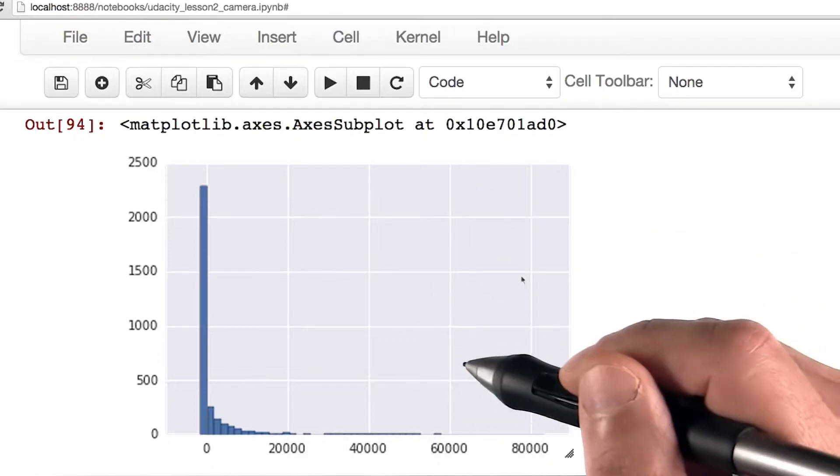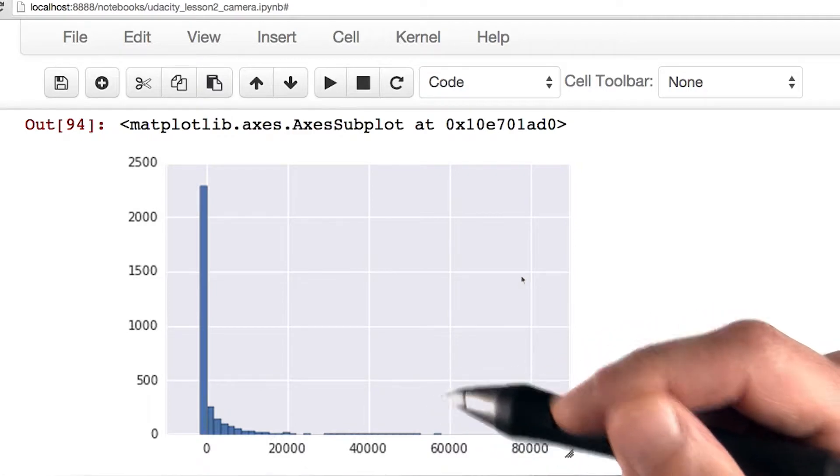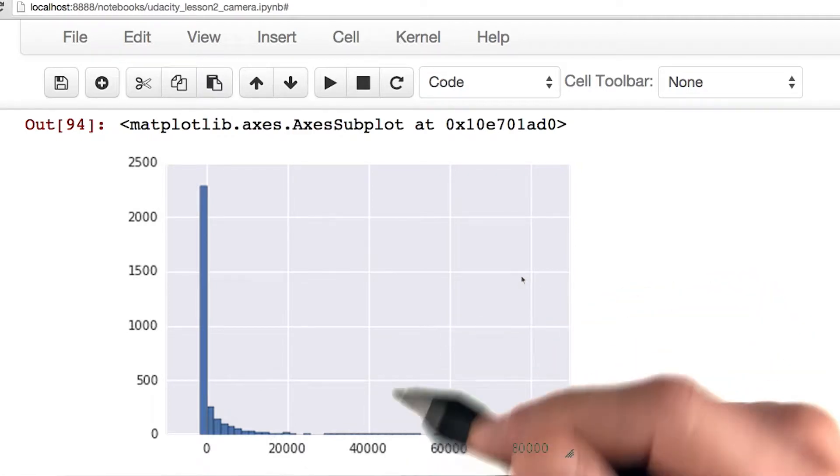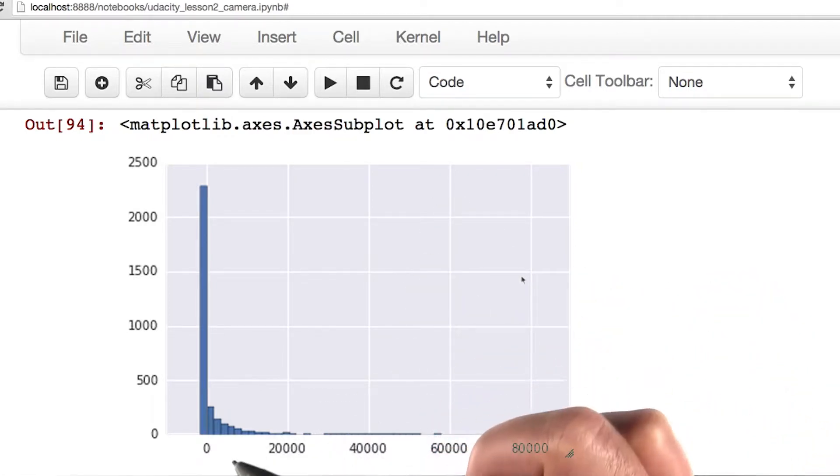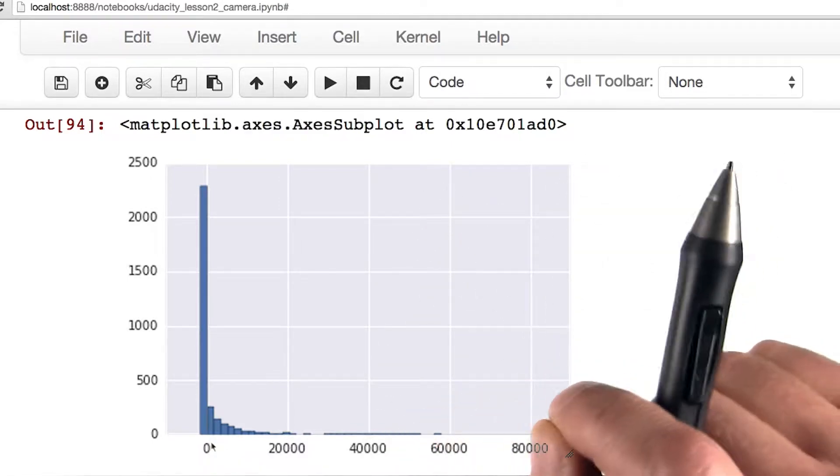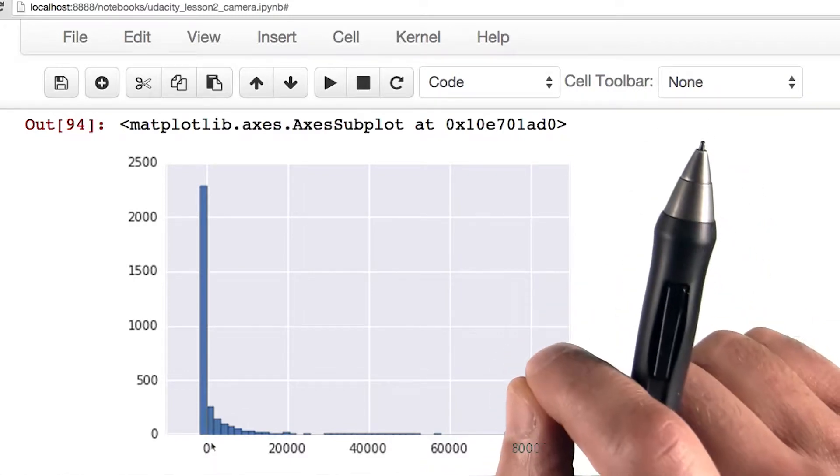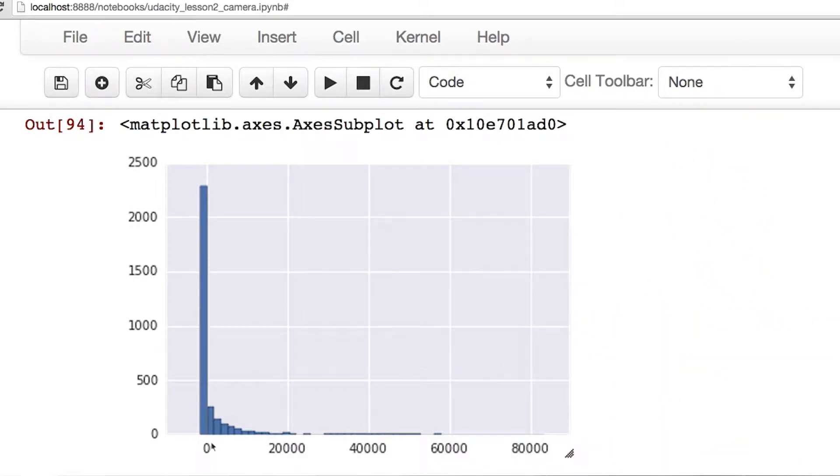Now if you recall when we looked at our histogram of signed error using our guess of 1451 and a half seconds, we saw that most of the histogram occurs before zero. This suggests that if we adjusted our model just a little bit by perhaps adding an offset, we might be able to improve our accuracy. So let's think about that problem a little bit.